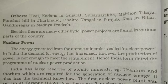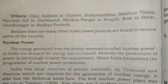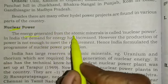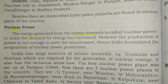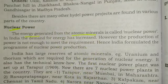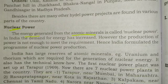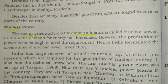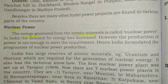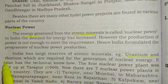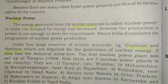Next we are going to talk about nuclear power. The generation of energy from atomic minerals is called nuclear power. In India, demand for energy has increased, but the production of power is not enough to meet our requirements. So India has formulated a program of nuclear production. India has large deposits of atomic minerals such as uranium and thorium, which are required for nuclear energy generation. The first nuclear power station was set up in Tarapur in the year 1969.